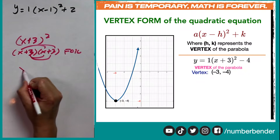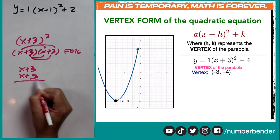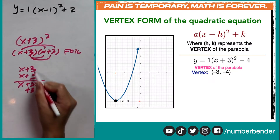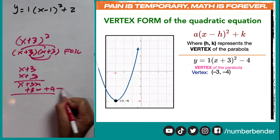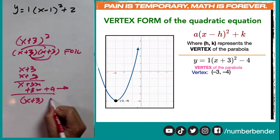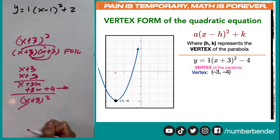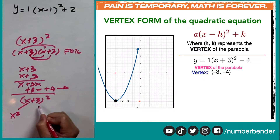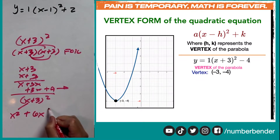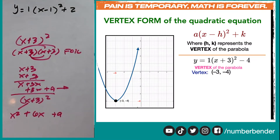Or we can do it vertically: x plus 3 times x plus 3, giving us x times x, x times 3, 3 times x, and 3 times 3, which is 9. In my case, whenever I see x plus 3 quantity squared, I square the first term to get x squared, then double the product of the terms to get 6x, and square the last term to get 9. So that is how we expand x plus 3 quantity squared.